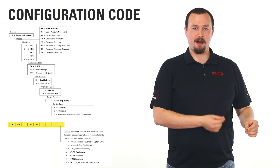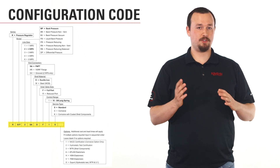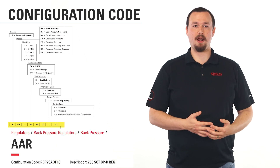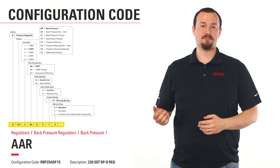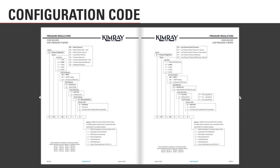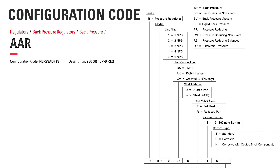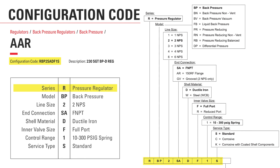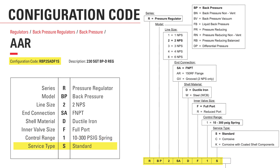The configuration code is not on the valve — it's simply how you build a valve to order. This is the newest naming convention for Kimray and began in 2020 to better align with industry standards and improve customer experience. The code builder charts are included in the front pages of each catalog section and allow for the most precise naming of a product, including all the needed information in one strand of letters and numbers. In our AAR example, the standard configuration would generate a code meaning: a pressure regulator series, back pressure model, with two-inch line size female NPT connections, ductile iron shell material, full port inner valve size, with 10 to 300 pounds per square inch control range, operating for standard surface type.